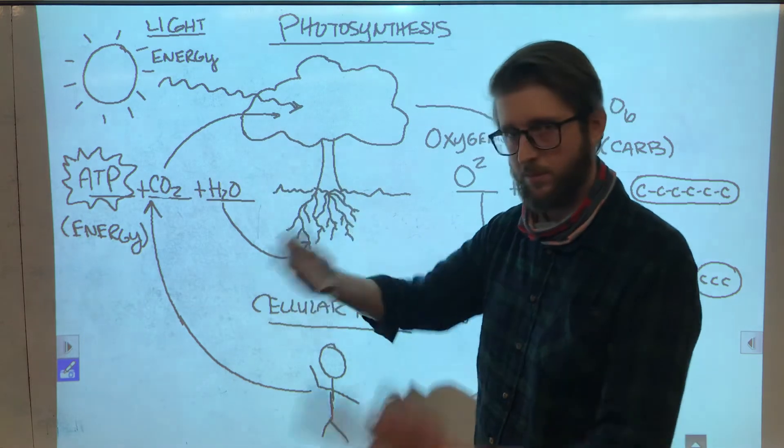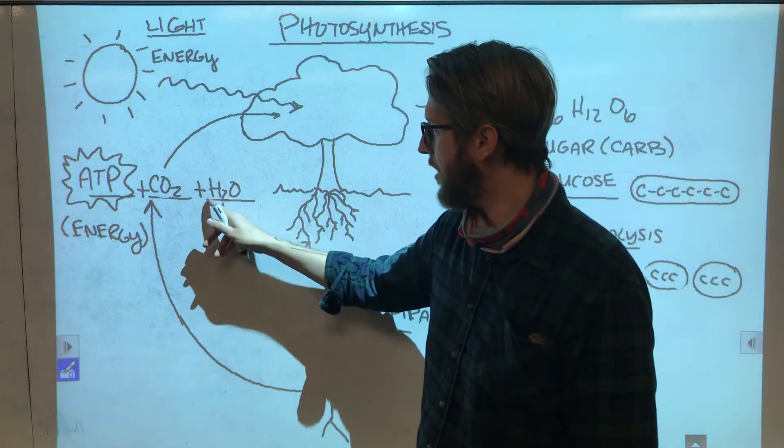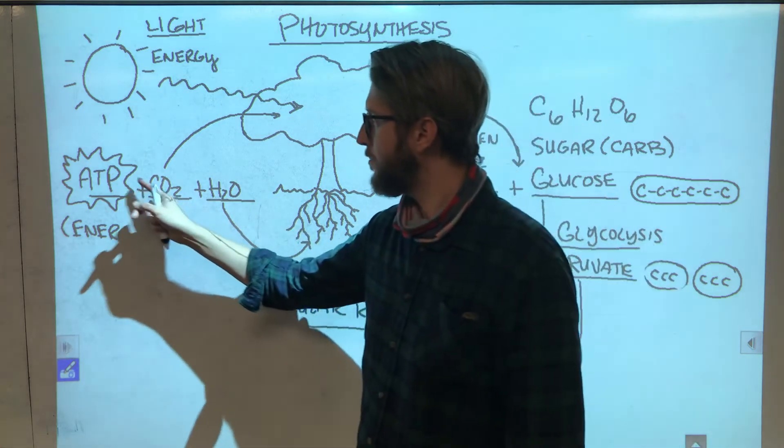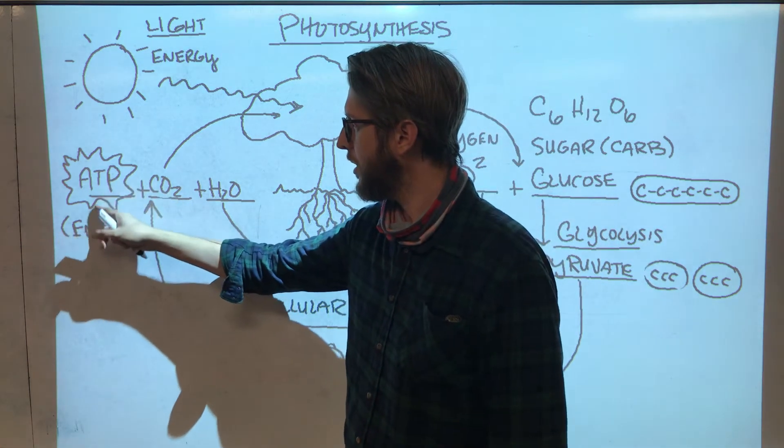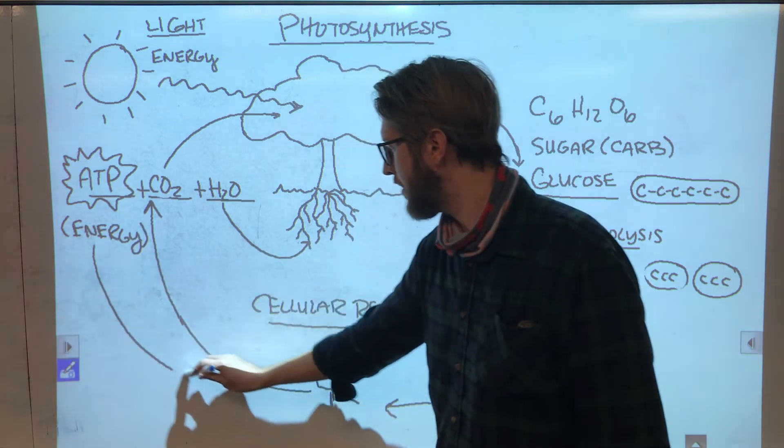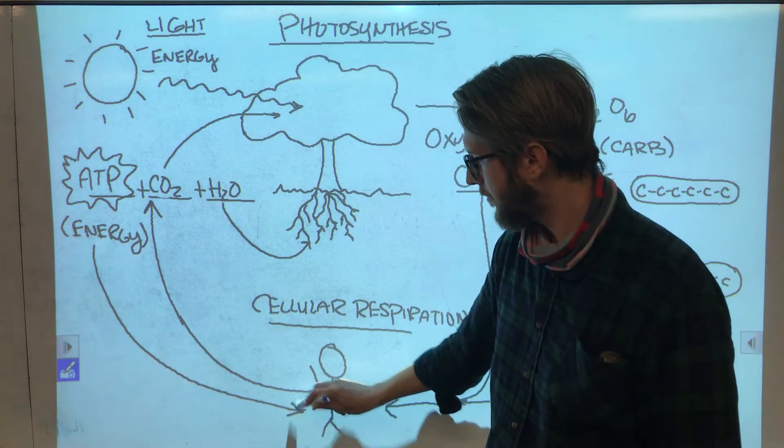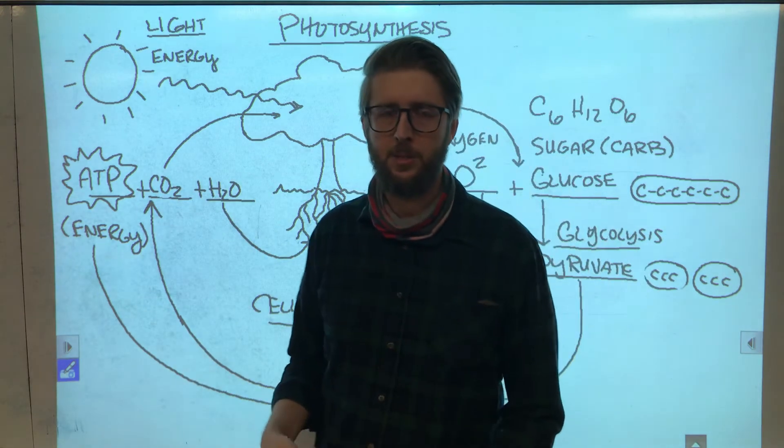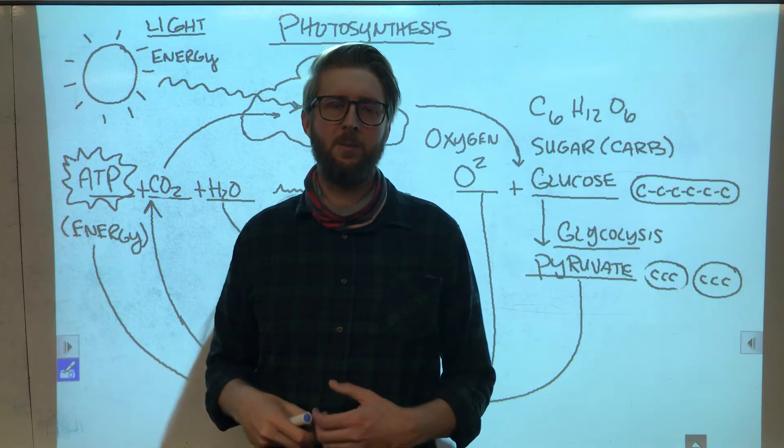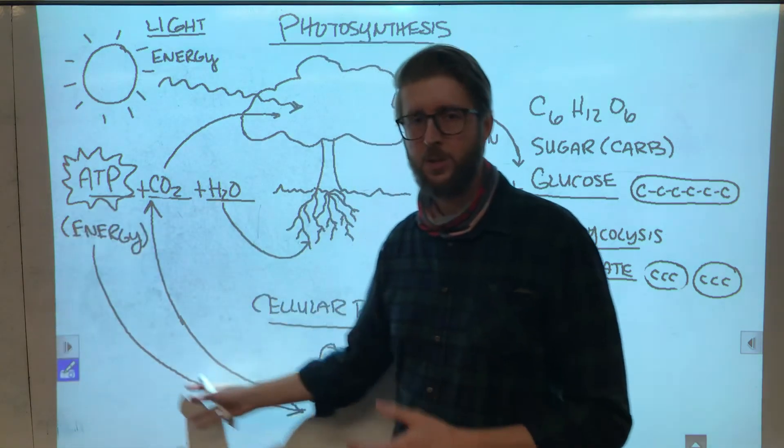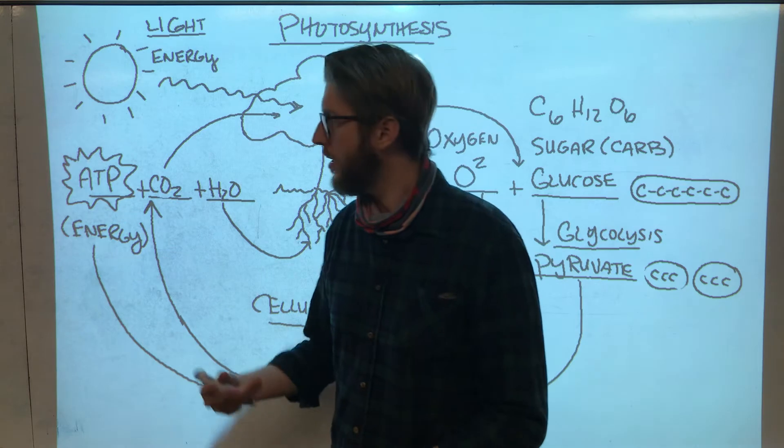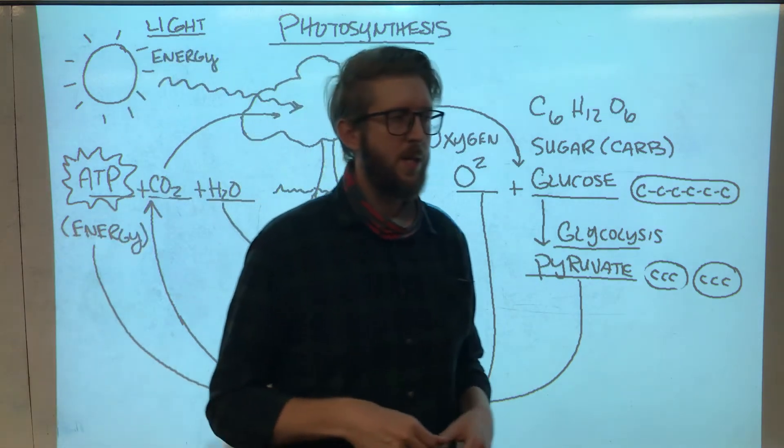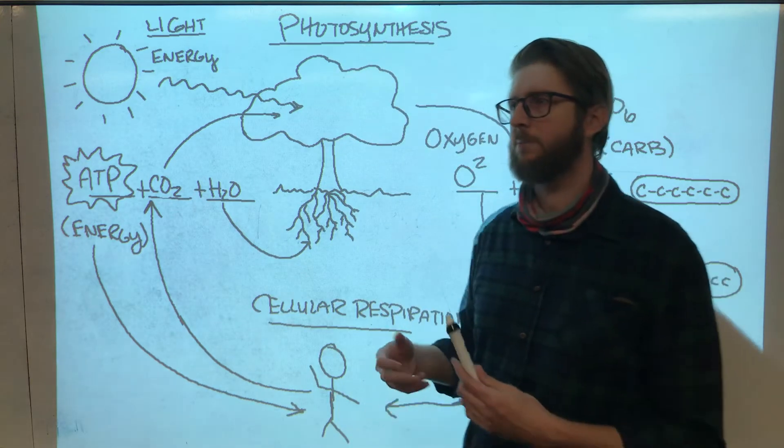So your body makes CO2 as waste which the plant then absorbs, and it makes H2O as waste which the plant absorbs. But this third thing, the ATP, actually stays in the body. And what this is, is the best way to describe ATP is like it's money. This is energy that your body is going to use to operate.